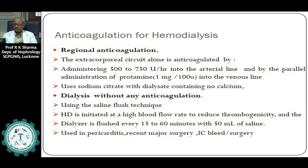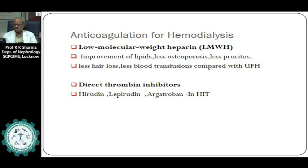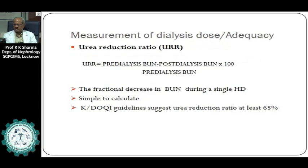This RO-treated, much purer water is then used for preparing dialysate. Many units store this water in a tank and distribute it through a loop. What is recommended is that this loop should be a continuous loop with no breaks, ensuring water does not stagnate. The tubing in the distribution loop should be of PEX material, which is highly compatible and does not leach any contaminations.